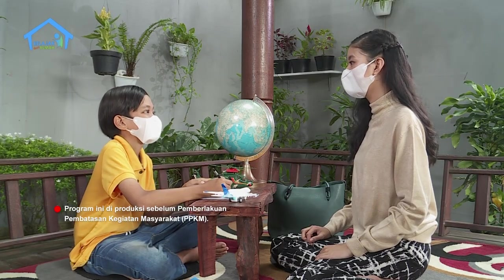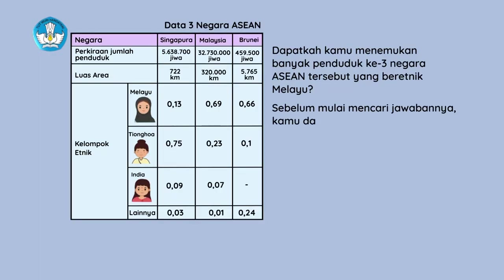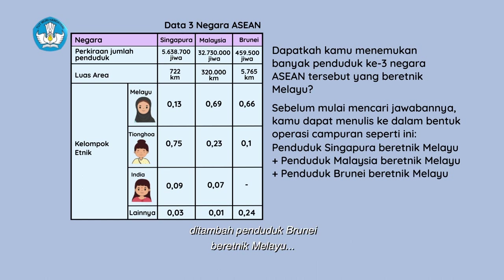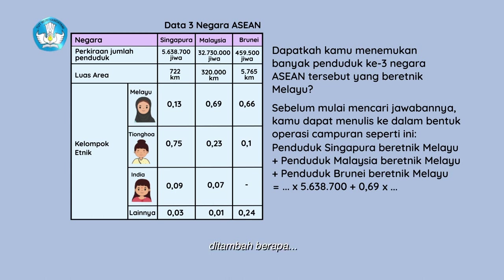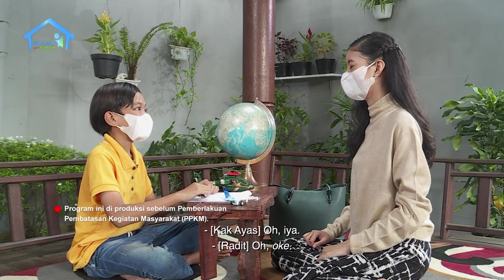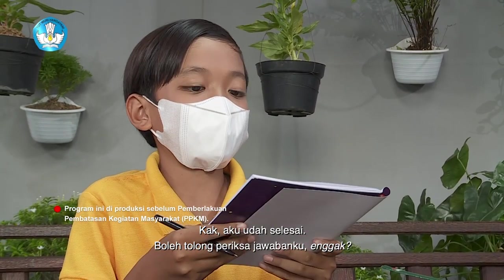Sudah, ada pertanyaan lagi gak Kak? Terakhir nih: Dapatkah kamu menemukan banyak penduduk ketiga negara ASEAN tersebut yang beretnik Melayu? Sebelum mencari jawabannya, kamu dapat menulis ke dalam bentuk operasi campuran seperti ini: penduduk Singapura beretnik Melayu ditambah penduduk Malaysia beretnik Melayu ditambah penduduk Brunei beretnik Melayu. Sama dengan berapa kali 5.638.700 ditambah 0,69 kali berapa ditambah berapa kali 459.500. Kita pakai cara yang tadi aja ya Kak. Aku udah selesai, boleh tolong periksa jawabanku gak?